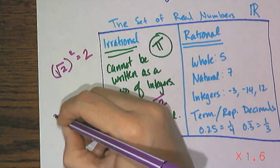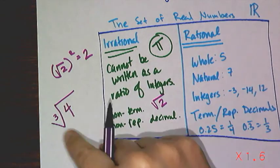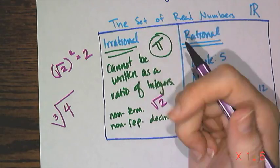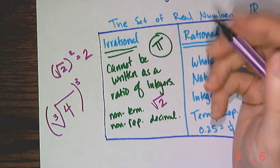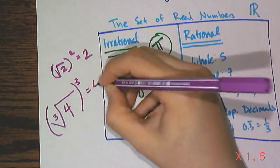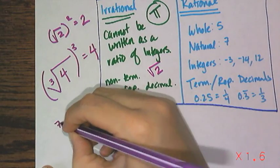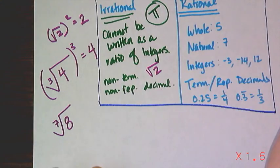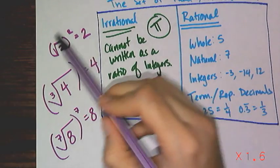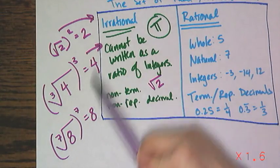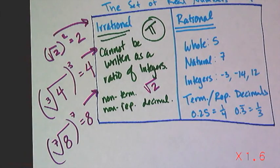And cube roots are written like this, with a 3, the checkmark for the radical, and then some number. This is the cube root of 4. And by definition, if I take the cube root of 4 and I cube it, meaning multiply it by itself 3 times, I'm going to get 4. And that's not the only kind of root. We can have any kind of root we want. We can have a 7th root of 8, which means that if I raise that number to the 7th power, I'm going to get 8. And all of these numbers live inside the irrational numbers because they cannot be written as a ratio of integers.